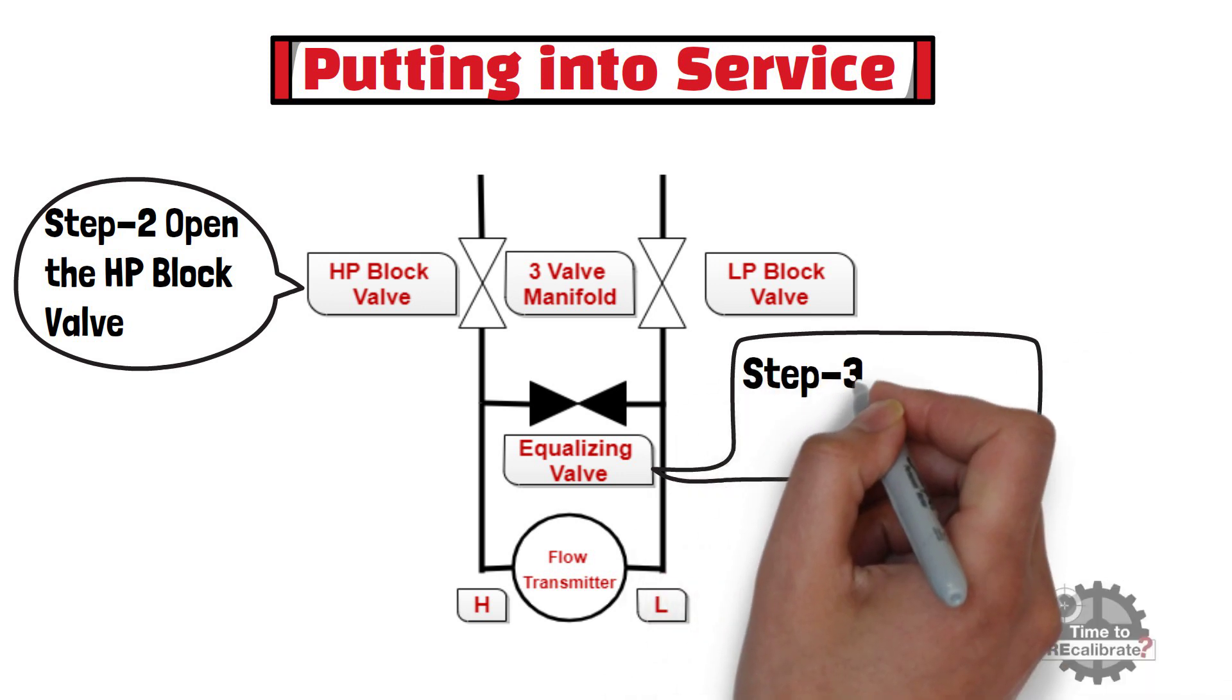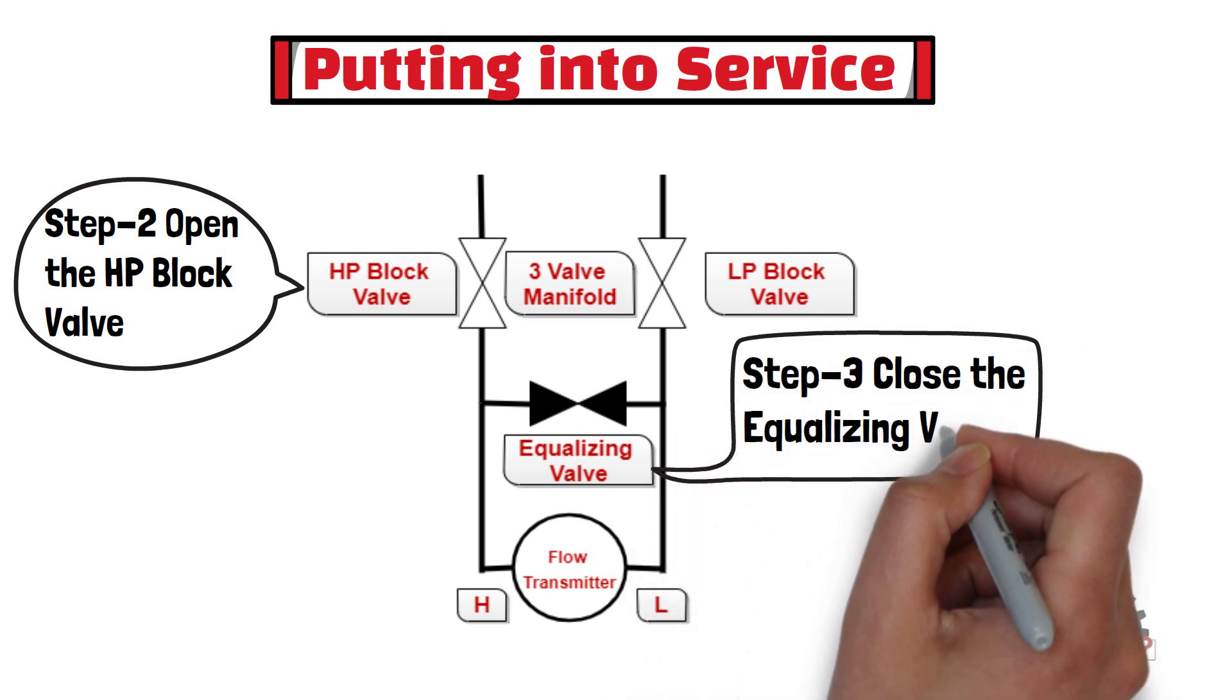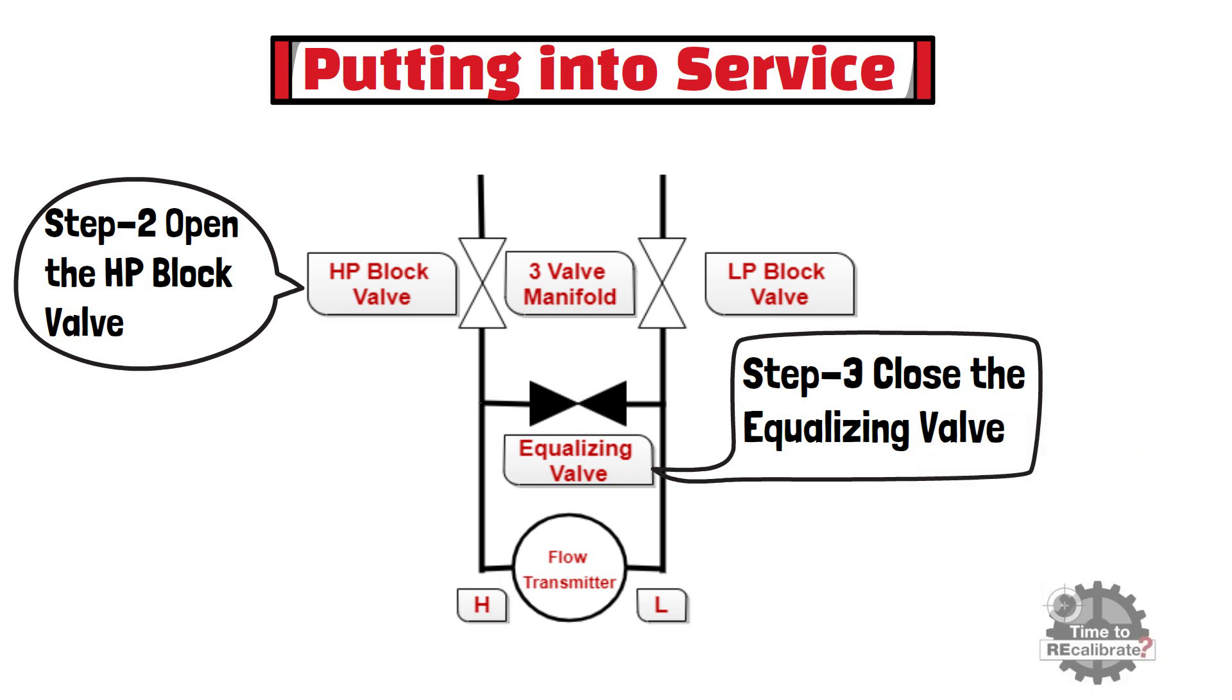Now, in third step, close the equalizing valve by rotating valve in clockwise direction. This will now isolate the HP and LP sides of the transmitter.